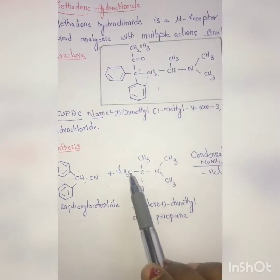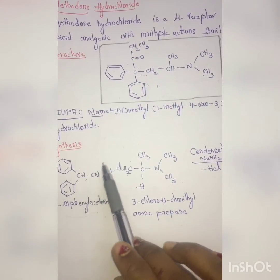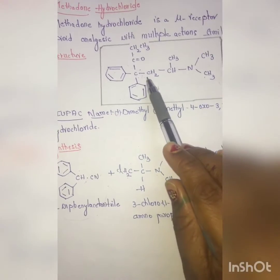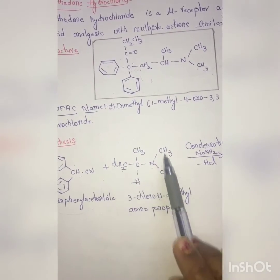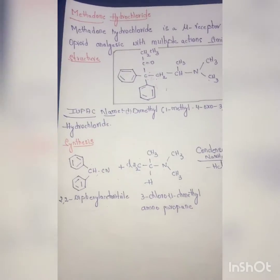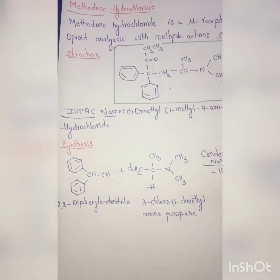Next, the second compound: 3-chloro-1,1-dimethylaminopropane. It has chlorine at position 3 and a dimethylamino group at position 1.